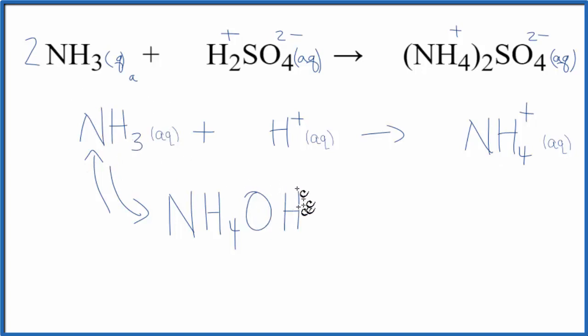But we could write a net ionic equation for the reaction of the ammonium hydroxide plus the sulfuric acid. And there's a link in the description on how to do that. It would give us a different net ionic equation. But either way, here's the net ionic equation that we came up with for NH3 plus H2SO4.